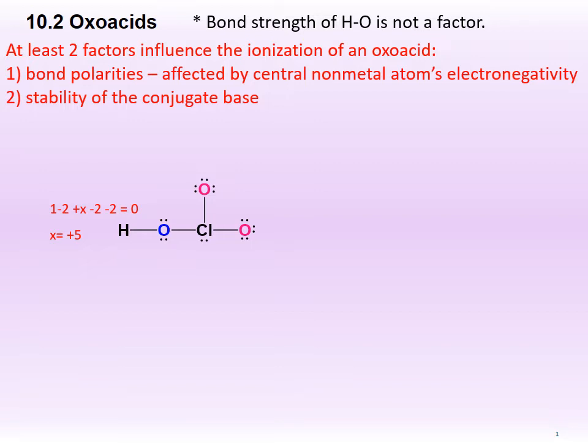The oxidation number of an atom is a number obtained when we treat bonds in the species as ionic bonds, regardless of whether they are really ionic or not. In this case, chloric acid is a covalent compound, not an ionic compound, but we shall pretend it is an ionic compound for a while. An oxidation number of +5 means that chlorine has lost 5 electrons, meaning it is sorely lacking in electrons. Next, we bring in the concept of electronegativity, which is the ability of a chemically bonded atom to attract electrons towards itself.